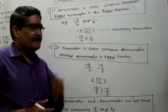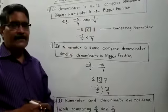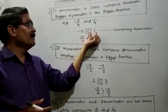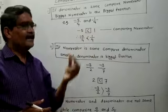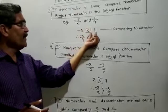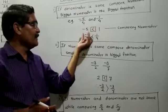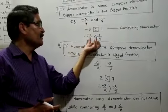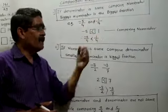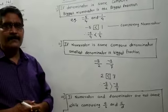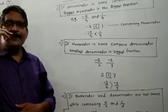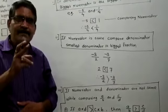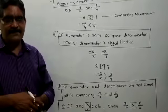Is -5 greater or is 1 greater? Since 1 is positive and -5 is negative, 1 is greater than -5. Therefore, -5/4 is less than 1/4. If the denominator is the same, compare the numerator — the biggest numerator is the biggest fraction.